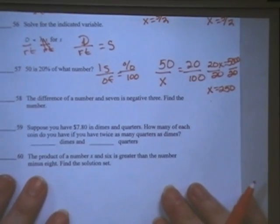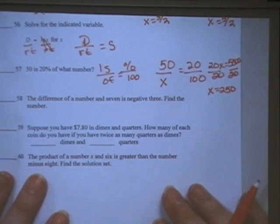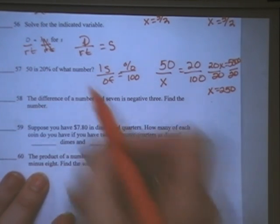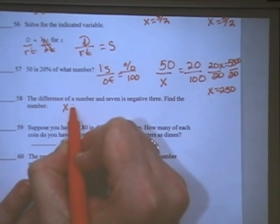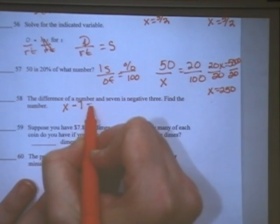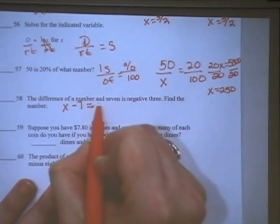Number 58 asks me to solve the difference of a number and 7 is negative 3. Difference means to subtract, and a number, I'm going to use x. x minus 7 equals negative 3. If they want me to find that number, I have to add 7 to both sides.